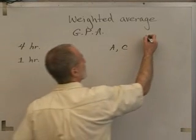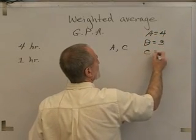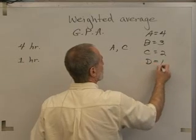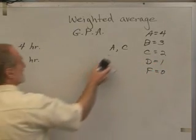Let's assume we're on a four-point scale where A is a four, B is a three, C is a two, D is a one, and a failing grade doesn't carry any grade points.